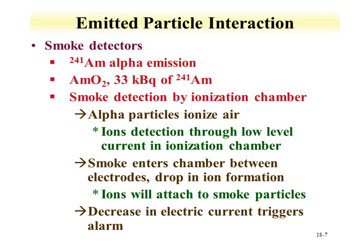One common design uses a sealed detector and an open detector. The sealed ionization chamber does not have smoke particles passing through it, so changes from the sealed current to the open current are what trigger the alarm indicating the presence of smoke.